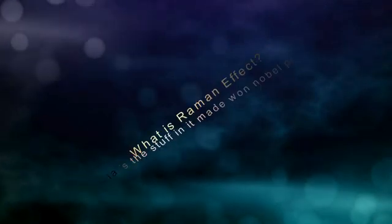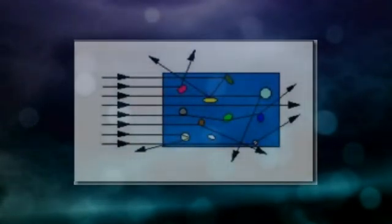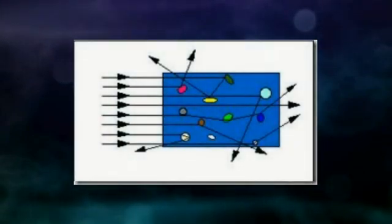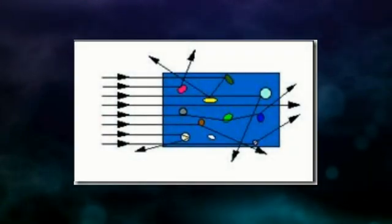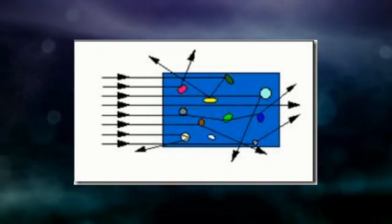What is the Raman effect and what is the stuff in it that won the Nobel Prize? When a light beam travels through a substance, the light is deflected by the molecules of the substance. It means the particles of the substance absorb the photons and subsequently emit light.